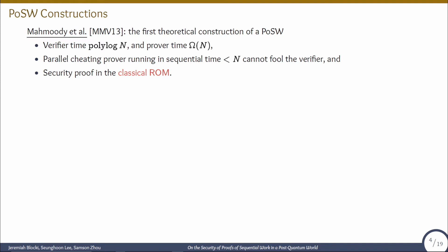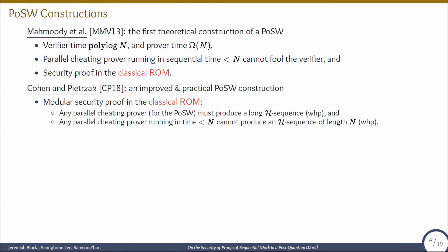There have been a number of constructions of proofs of sequential work. The first theoretical construction was developed by Mahmoudi et al., with verifier time polylog n and prover time omega n as desired, and the construction is secure against parallel attackers with a security proof in the classical random oracle model. Later, Cohen and Peterczak gave an improved and more practical construction, with a modular security proof showing that any parallel cheating prover must produce a long H sequence with high probability, and any parallel cheating prover running in time less than n cannot produce an H sequence of length n with high probability.